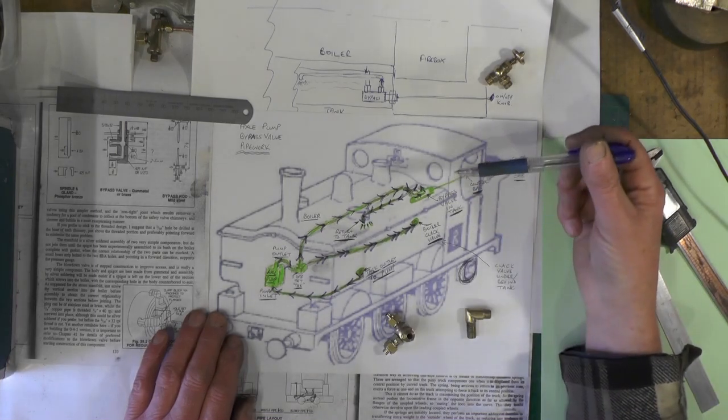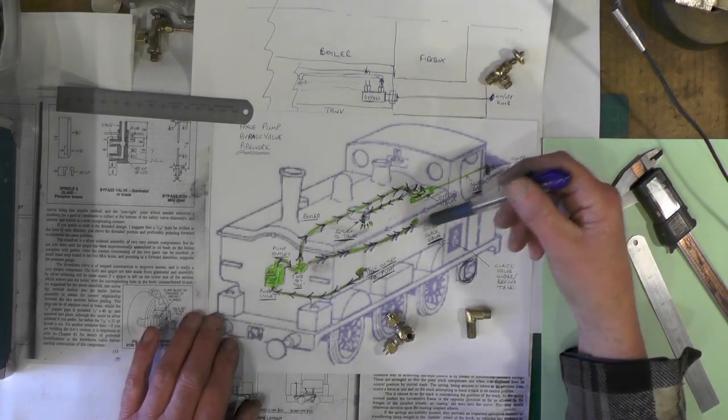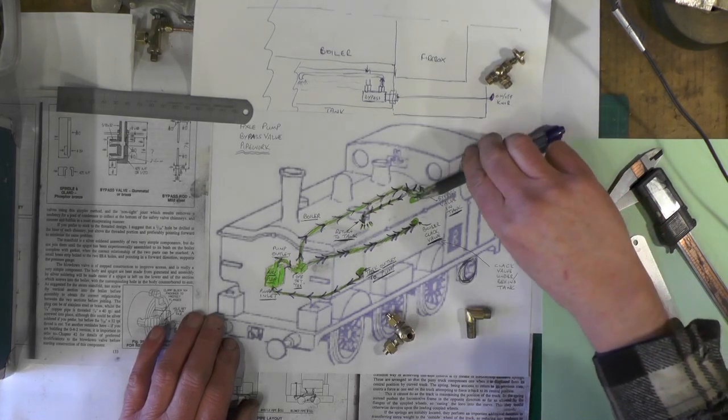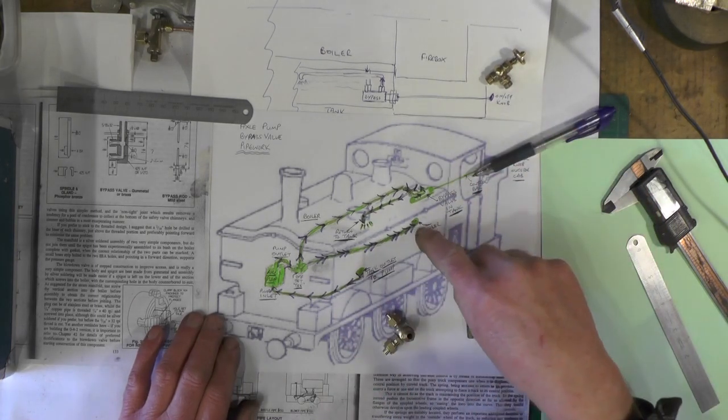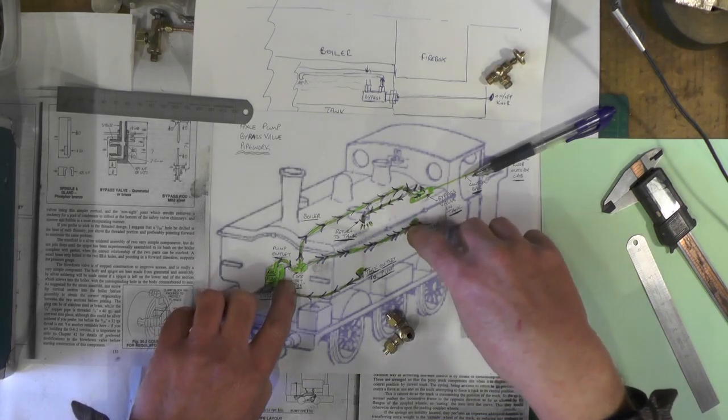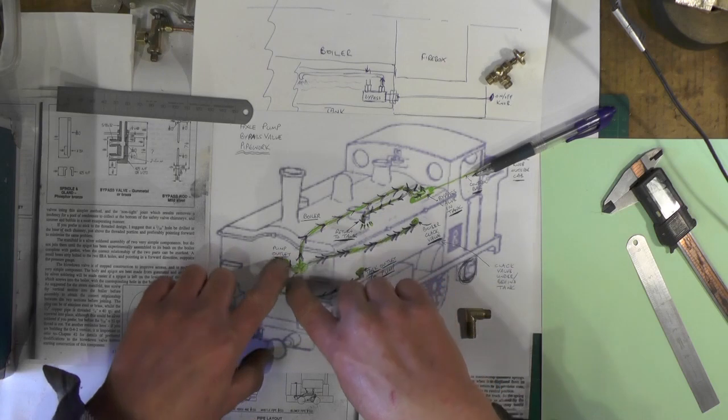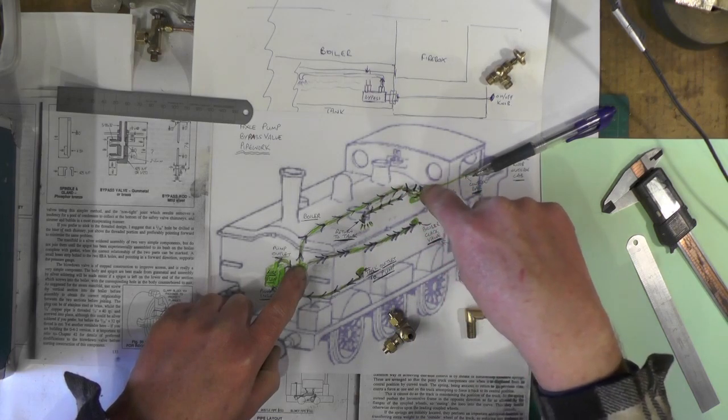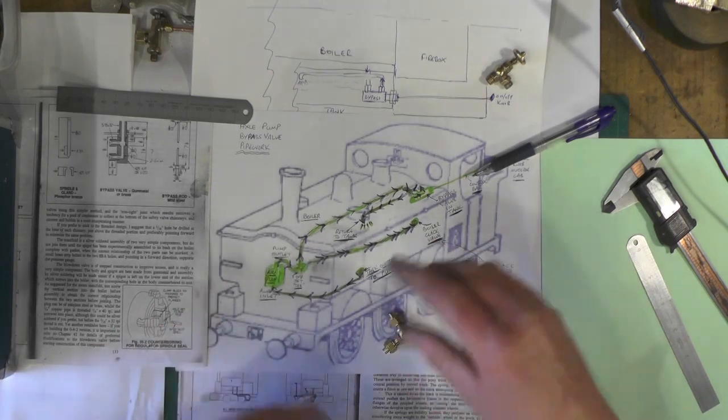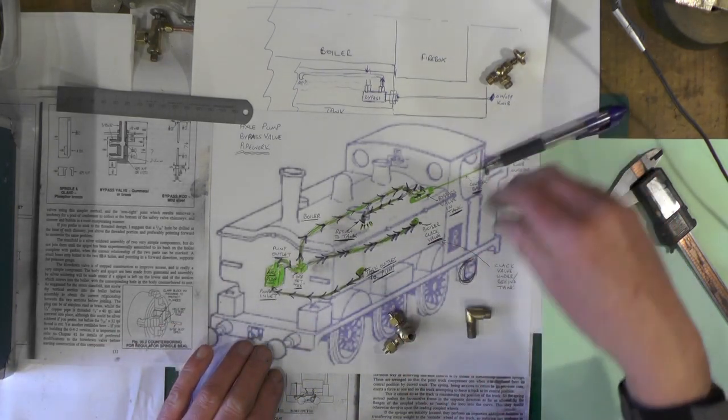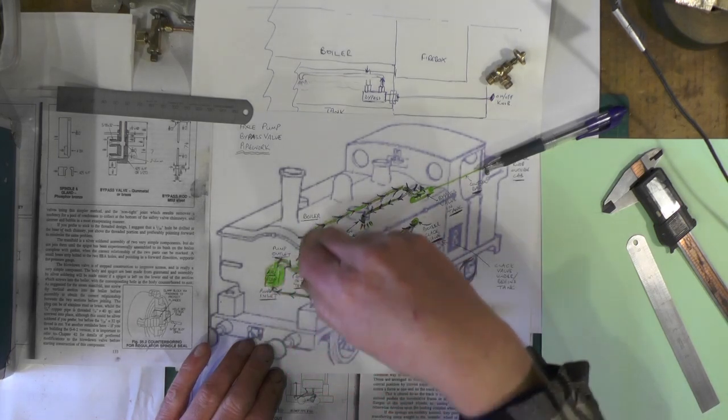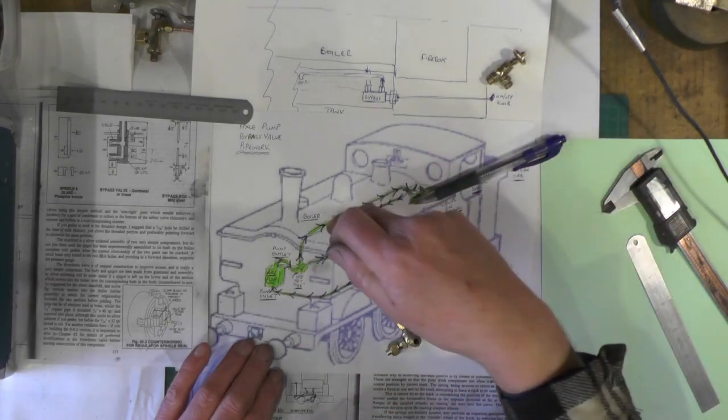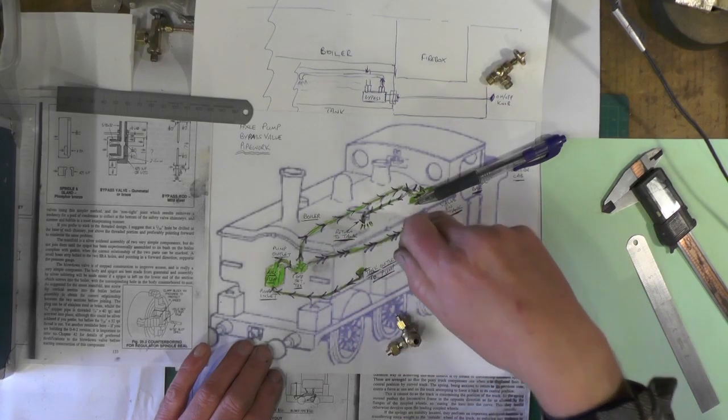So when the boiler gets full of water you've obviously got to have some method of stopping that water going in. So this is where the bypass valve comes into play. So what you do then you open your valve up and then water because there's 80 pound of pressure on the boiler, water's then going to find the least resistance and stop going in the boiler and go up this pipe freely through the valve and back into the tank. Fed into the pump up through the pipe through the valve back into the tank. Close your valve off then that's going to stop the water going up there and then it's going to feed the boiler to the clack valve.